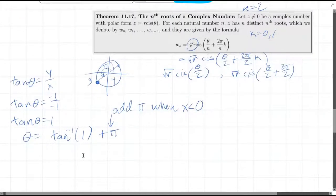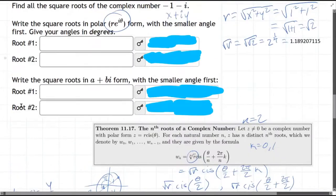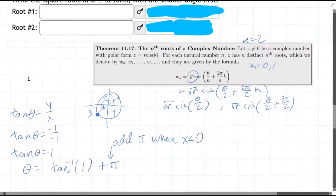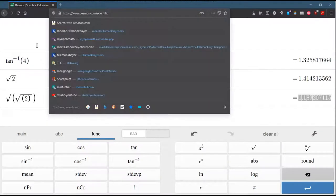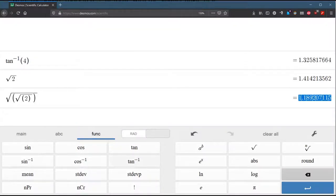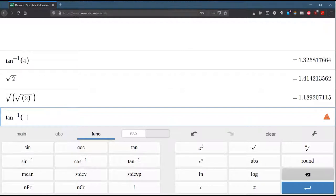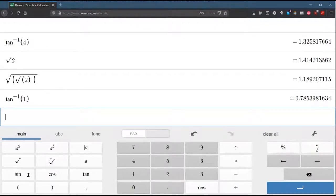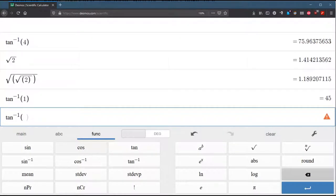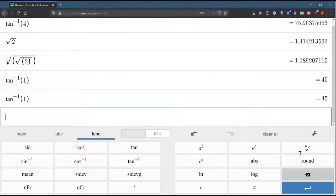So we're ready to go ahead and compute tangent inverse of one. And somewhere, I believe this problem mentioned degrees. Give your angle in degrees, so we better make sure our calculator is in degree mode. So, I'm using the desmos.com/scientific calculator right there. I'm going to use tangent inverse of just one.